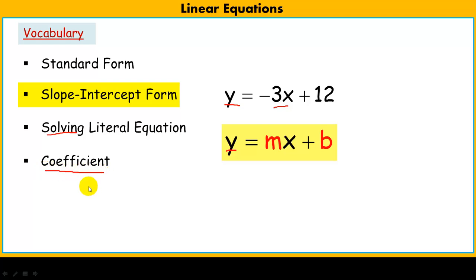And a coefficient, again, it's very important that you understand what a coefficient is. It's that number that multiplies a variable. So in this case, m, the coefficient for x, is going to be our slope. And again, we'll talk about slope in a later lesson.